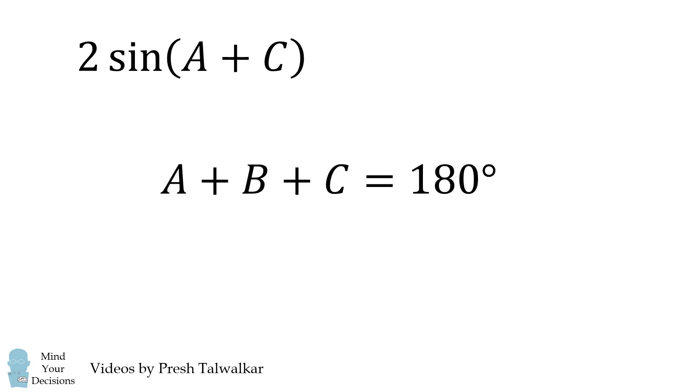Now, how do we compute 2 times the sine of angle A plus angle C? First, recall that the sum of the angles in a triangle in the plane is 180 degrees. We subtract B from both sides, so we get A plus C is equal to 180 degrees minus B.